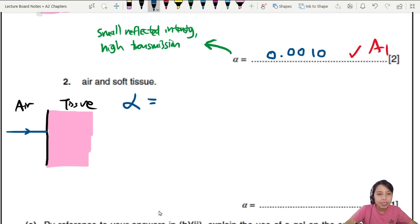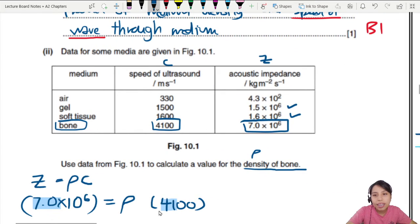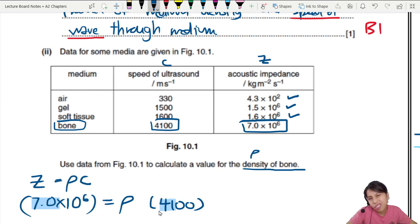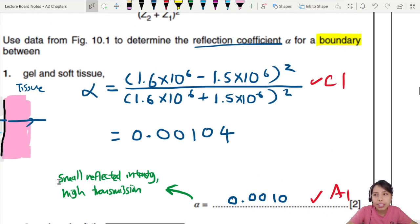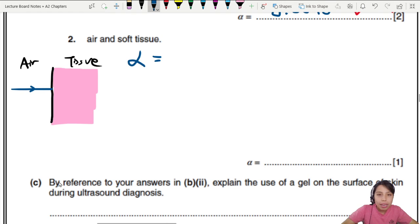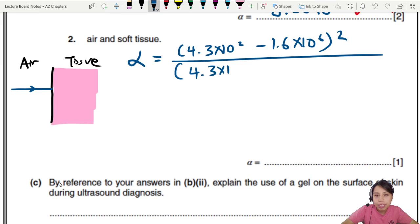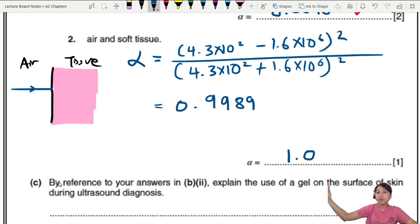Alpha is going to be, well, what is air and tissue? Air is 4.3 times 10 to the 2. So we're going to write that down in our calculation and do the exact same steps like that. So let's go down here. Plug in the equation. I'm just going to put 4.3 times 10 to the 2, which is air, minus 1.6 times 10 to the 6 square. So divide by both acoustic impedances add together. Plus 1.6 times 10 to the 6 square. This one will give me a very big number, 0.9989. And I could round this off to, I guess, 1.0. They didn't specify how many SF I want, so I'm going to keep my 2 SF. That's really big. 1 is the highest you can go, pretty much. So that is one mark only.